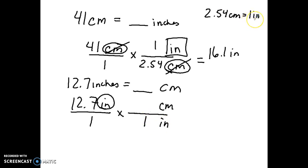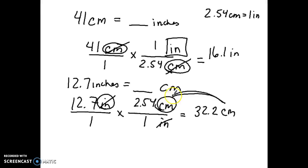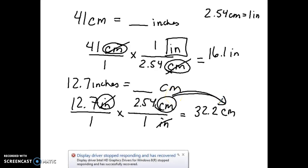Inches always has the coefficient one in this conversion, so I put one in front of inches. 2.54 goes with centimeters. Solving this mathematically gives 32.2, and since inches canceled out, I'm left with centimeters. So 32.2 centimeters is the answer.